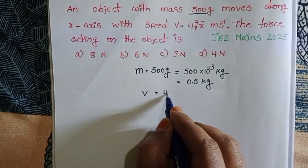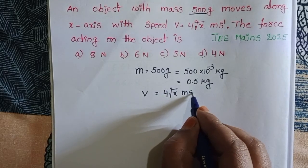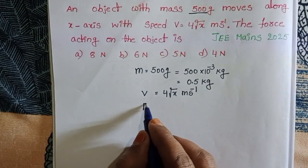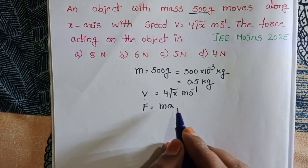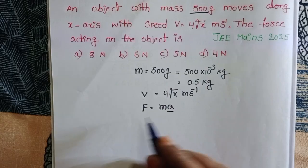Speed of the object along the x-direction is 4 times square root of x meters per second. We know force equals mass times acceleration. First, we calculate the acceleration of the object.